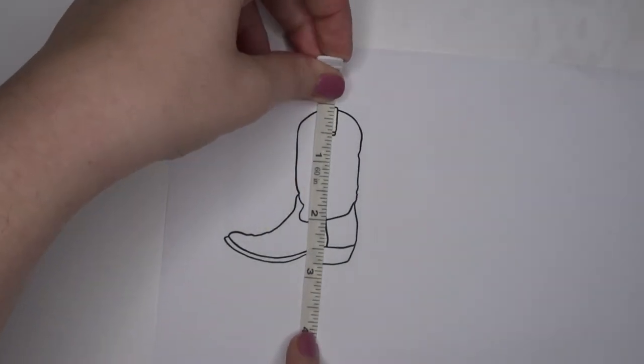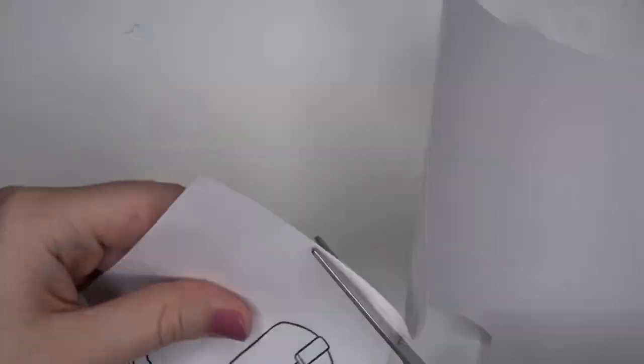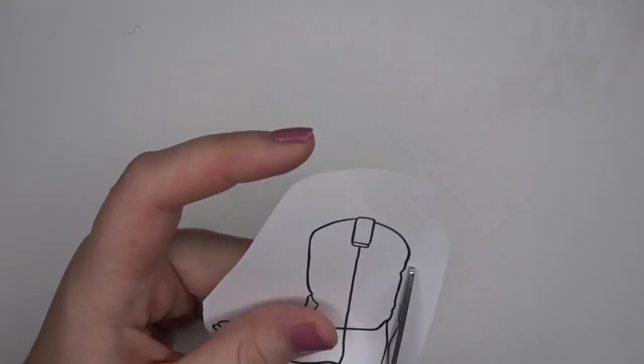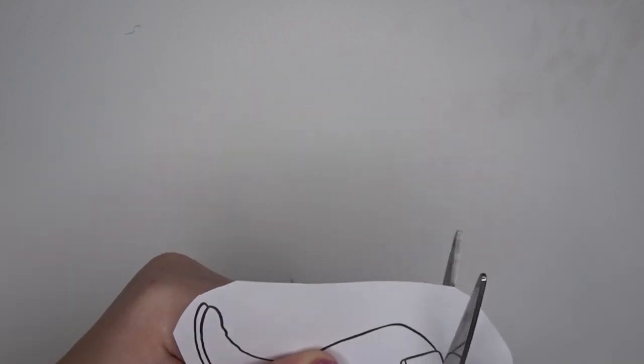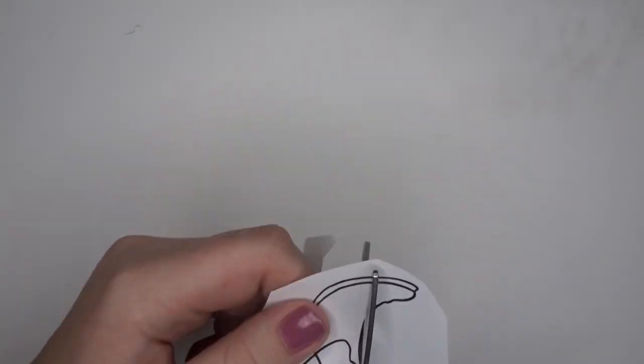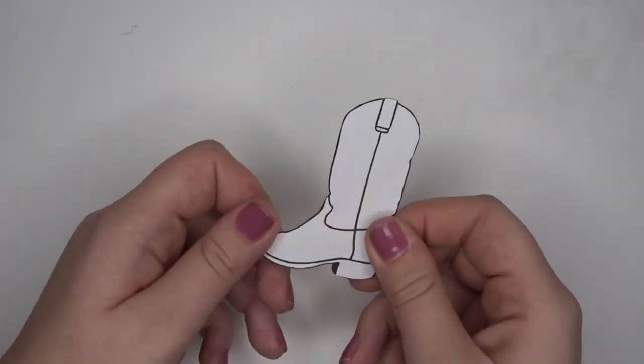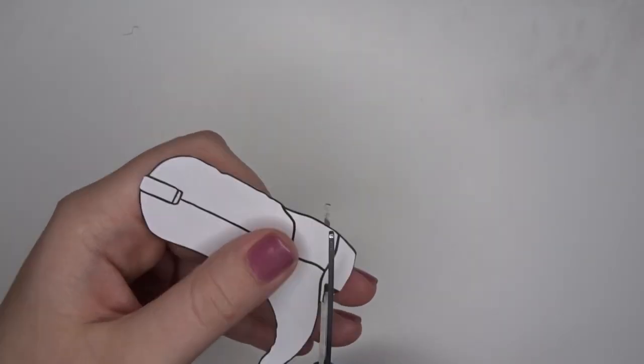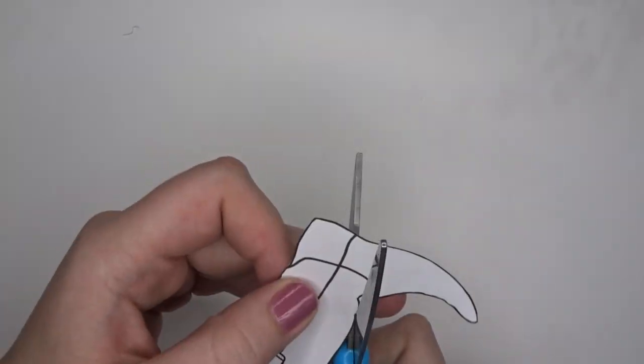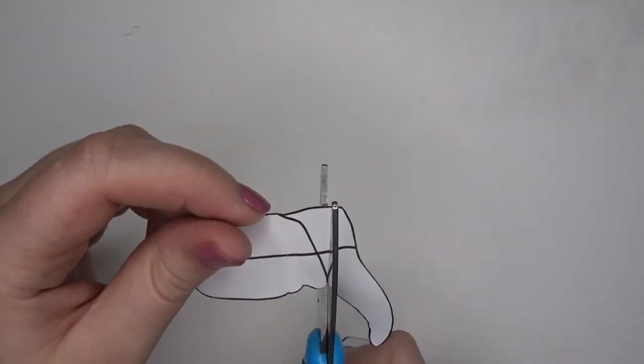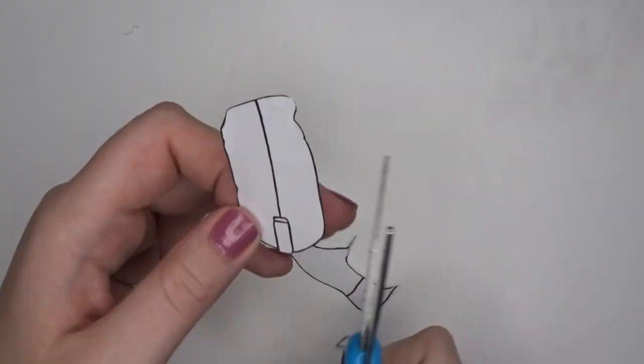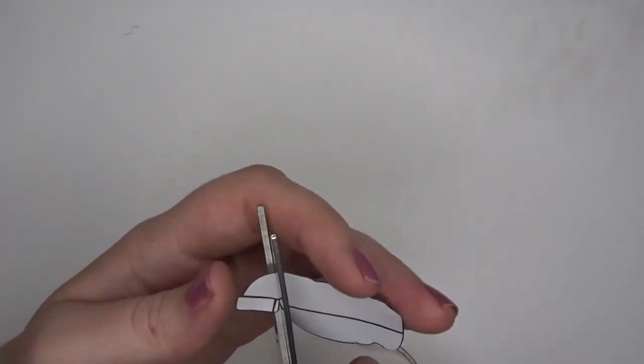I knew I wanted to do a cowboy boot, so I just found a basic line art drawing of a cowboy boot and I'm cutting it out to the right shape and size so that I have the right proportions as opposed to just freehanding something. I am cutting out each part of the boot so I have a stencil to place on top of the clay before cutting it.